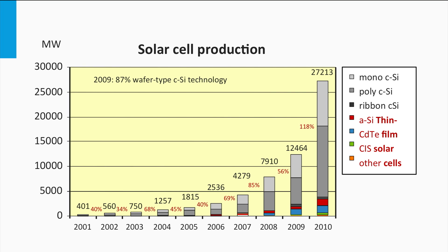The inorganic thin film PV technologies like amorphous silicon, cadmium telluride and CIGS are responsible for the remaining 10%.